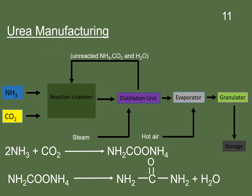Ammonia and carbon dioxide are used as raw materials and are fed into the reaction chamber, where they react together to form ammonium carbamate. The formula of ammonium carbamate is NH2COONH4. This ammonium carbamate then enters the distillation unit where steam is passed through it, and ammonium carbamate is converted into urea and water.